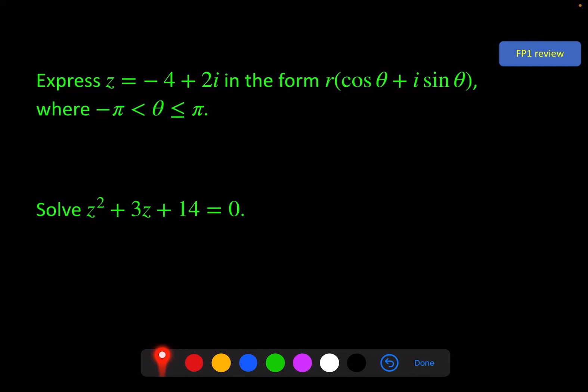Express this complex number, z equals minus 4 plus 2i, in the form r(cos θ + i sin θ), which is called the modulus argument form, where r is the modulus and theta is the argument, using the principal argument between minus π and π.